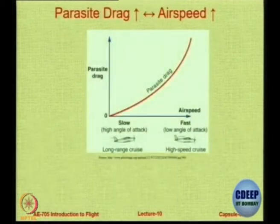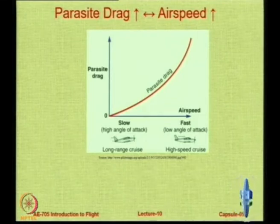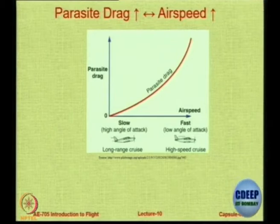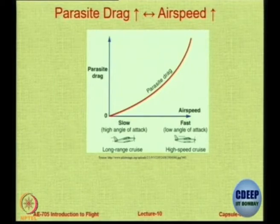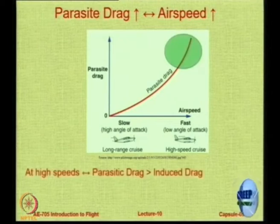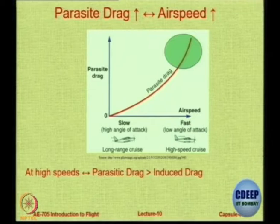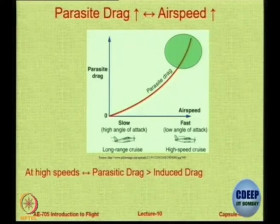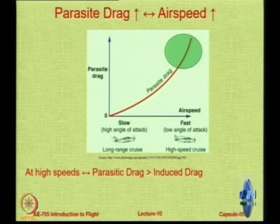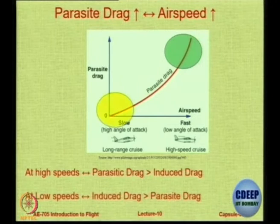Parasite drag increases as airspeed increases. In general, if you fly slow at a high angle of attack, you may have higher form drag, but when you fly fast at a low angle of attack, the rubbing of air on the surface gives you more skin friction. It depends on which term is larger in magnitude. Generally at high speeds, parasite drag is far greater than induced drag because at high speed C_L is low — when C_L is low, C_L squared divided by pi·A·e is also low. So high-speed aircraft are more concerned about parasitic drag reduction, while low-speed aircraft are more concerned about induced drag reduction.